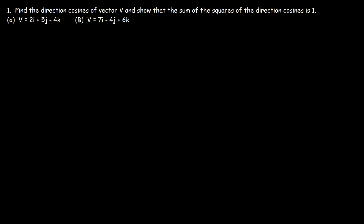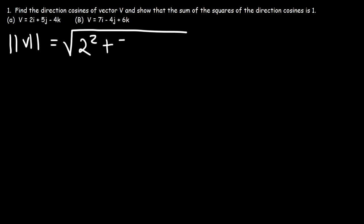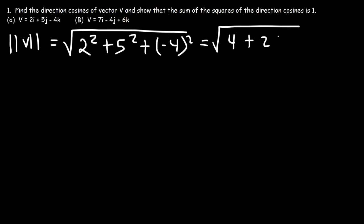Now let's work on a problem: find the direction cosines of vector v and show that the sum of the squares of the direction cosines is 1. Starting with part A, the first thing we'll do is calculate the magnitude of vector v. It's the square root of 2 squared plus 5 squared plus negative 4 squared. 2 squared is 4, 5 squared is 25, negative 4 squared is 16. That gives us the square root of 45.